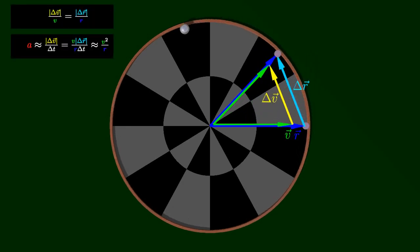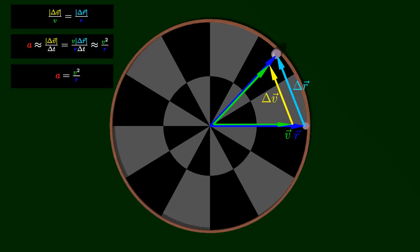This information then leads to a simple expression for the instantaneous acceleration in the limit as the length of the time interval goes to zero.